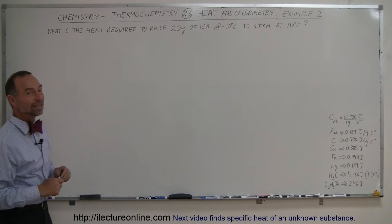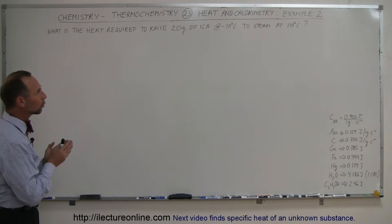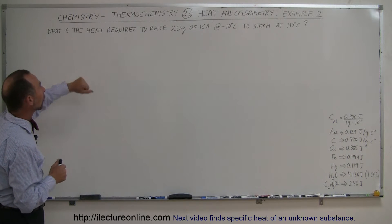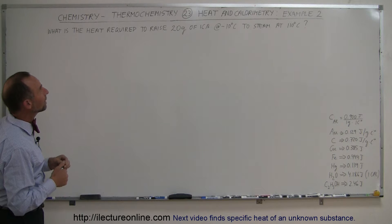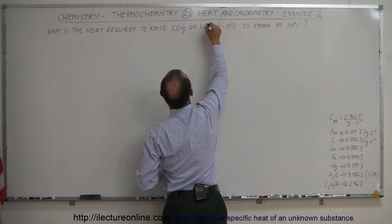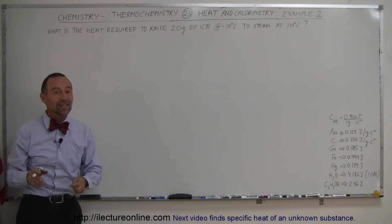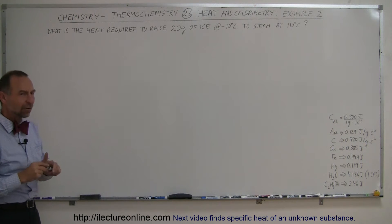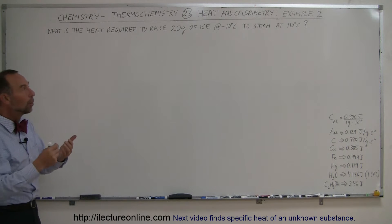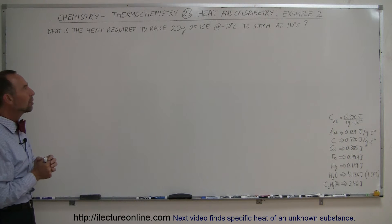Here's our second example of how we deal with heat and calorimetry, but here I wanted to go to a very special example. It says: what is the heat required to raise 20 grams of ice at minus 10 degrees centigrade to steam at 110 degrees centigrade? So here, not only are we heating things up, we're also going to go through phase changes, and I wanted to illustrate how we do that.